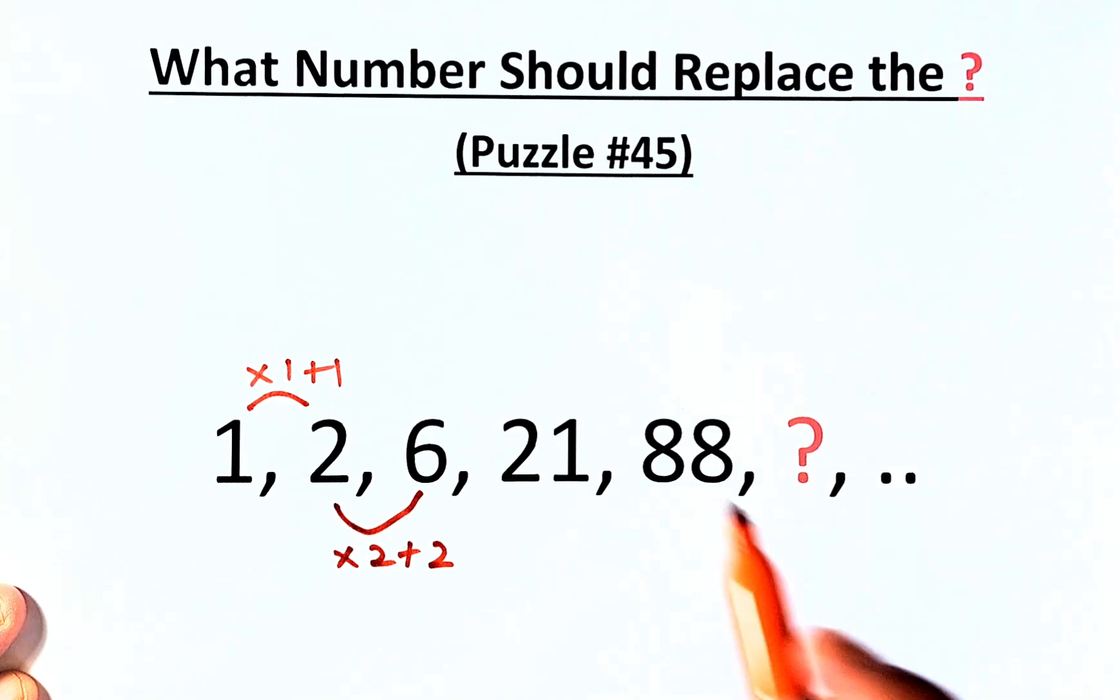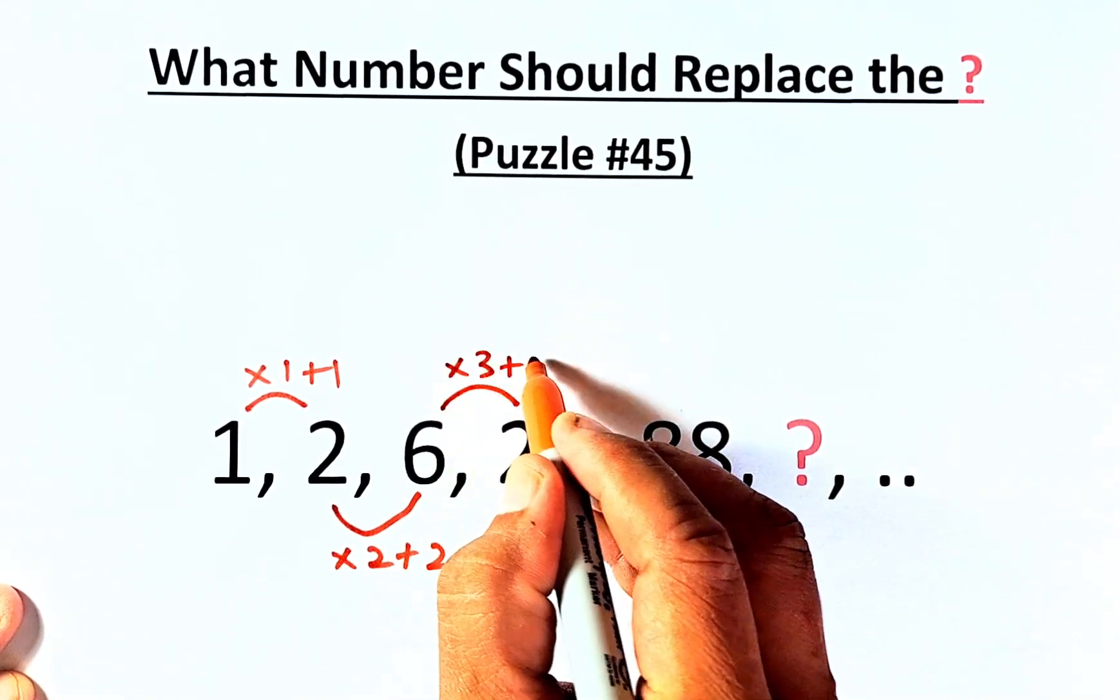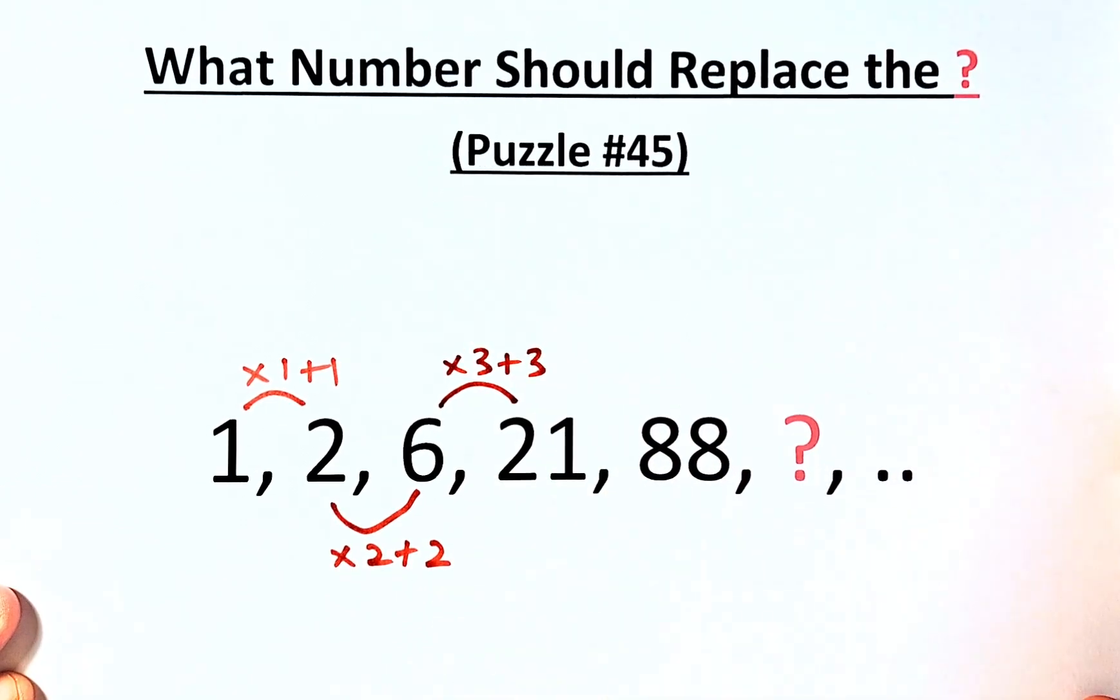And then the next step is going to be 6 to 21. As you know the pattern now, it's going to be multiply by 3 and add 3. So 6 times 3 is 18. 18 plus 3 is 21.